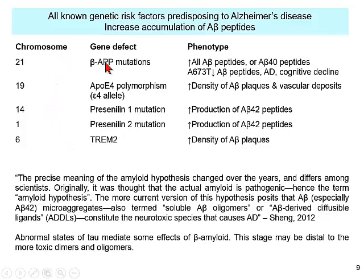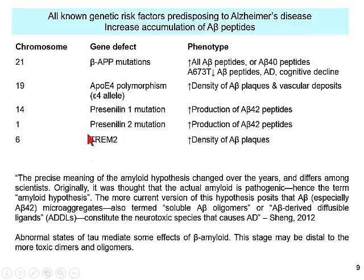There is a population in Iceland with a TREM-2 mutation that is actually protected against Alzheimer's. The amyloid hypothesis has evolved over the years and different scientists have different takes on it. It was originally thought that amyloid deposits themselves were pathogenic, but it is now thought that A-beta microaggregates or soluble A-beta oligomers are the neurotoxic species.